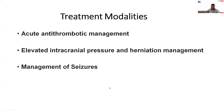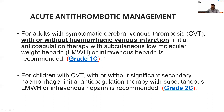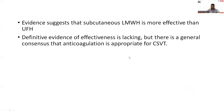Treatment modalities are broadly divided into acute antithrombotic management, elevated intracranial pressure and herniation management, and management of convulsions or seizures. For adults with symptomatic CSVT with or without hemorrhagic venous infarction, initial anticoagulation therapy with subcutaneous low molecular weight heparin or intravenous heparin is recommended (Grade 1C). For children with CSVT with or without significant secondary hemorrhage, initial anticoagulation is also recommended (Grade 2C). Evidence suggests subcutaneous low molecular weight heparin is more effective than unfractionated heparin.